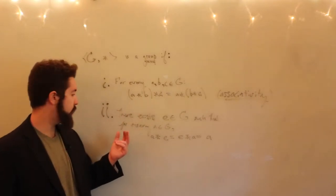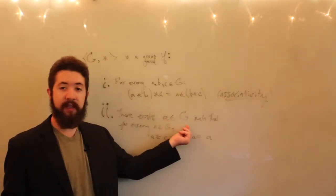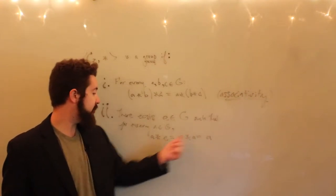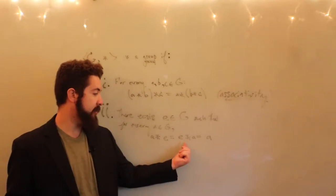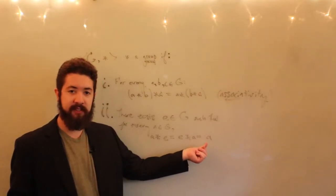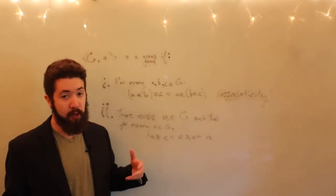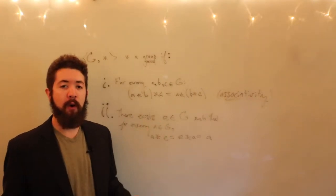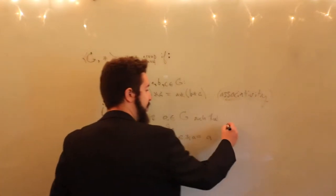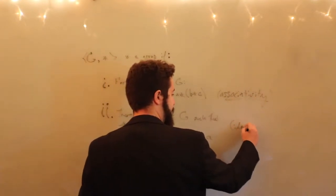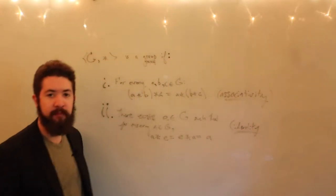Property two: there exists an element E in the set G such that for every A in G, A star E = E star A = A. This element E is going to be like multiplying by the number one or adding the number zero — it's going to be an identity element. We assume that G has such an identity.